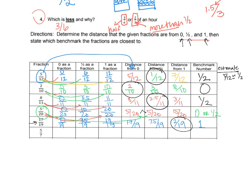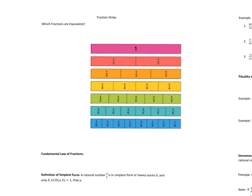As you start seeing fractions as close to the benchmarks you'll be able to estimate much better. For the last one, 5/7: zero is 0/7, one-half is 3.5/7, one is 7/7. The distance from zero is 5/7, from the midpoint is 1.5/7, and from one is 2/7. Since 1.5 is less than 2, 5/7 is closest to one-half as its benchmark.